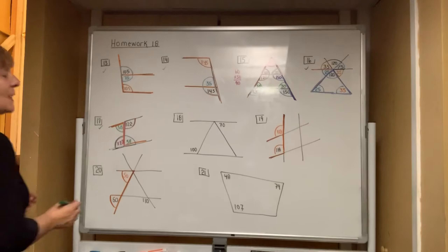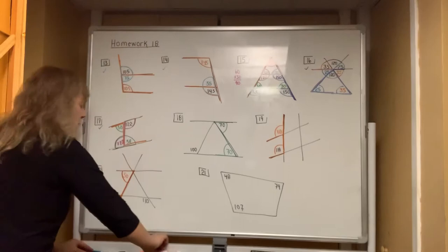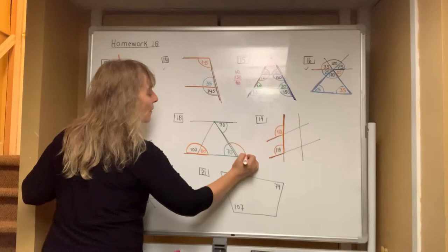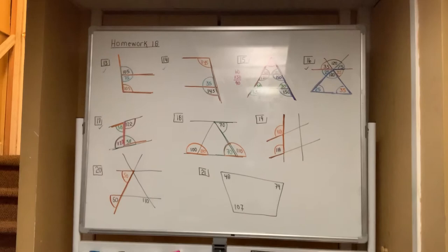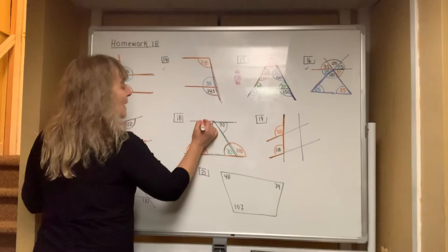In number 18, I hope everyone sees the Z angles. If this one is 70, then this one is 70. In addition to Z angles, do you see a linear pair? Without a calculator, you can figure out that one is 80 and the other is 110. There are also more Z's in this diagram — one that means the bottom 80 matches the top 80.